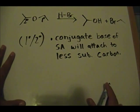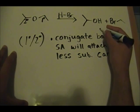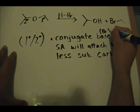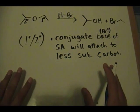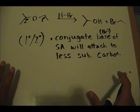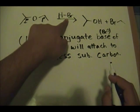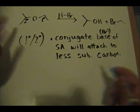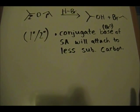Under this condition, the conjugate base — referring to Br minus — will attach to the less substituted carbon. So the bromine attached to this carbon because it's less substituted than this carbon over here. That's simply what happens. Now let's go over the reaction mechanism of this reaction.